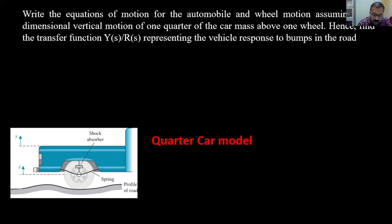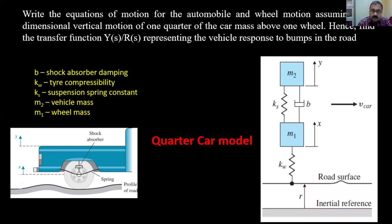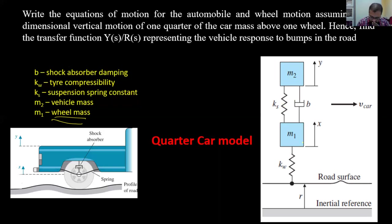The tire is connected to the vehicle body through a shock absorber. M2 represents one-fourth of the car/passenger mass and M1 represents the wheel mass. The vehicle is connected to the wheel through a dashpot B and suspension spring Ks. The tire has compressibility Kw represented by spring Kw. When a bump occurs there is an upward jerk; the free body diagram must be drawn.